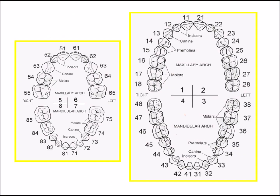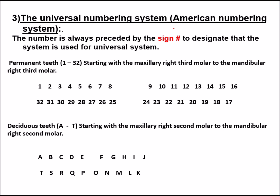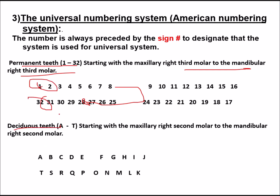In the Universal or American Numbering System, for permanent teeth numbering goes from 1 to 32, starting with the maxillary right third molar through to the mandibular right third molar. Letters are used for deciduous teeth.